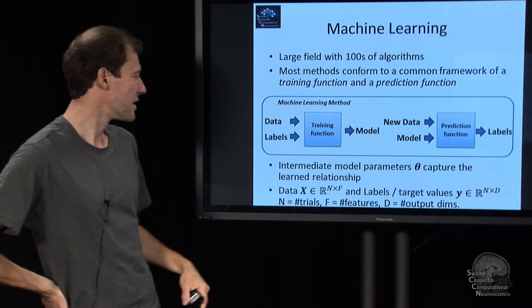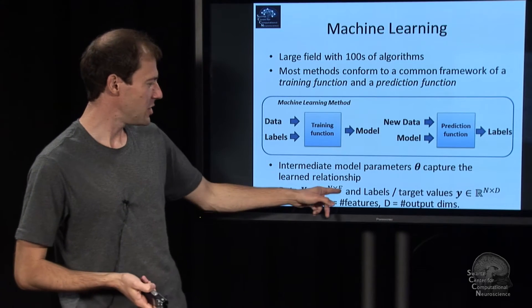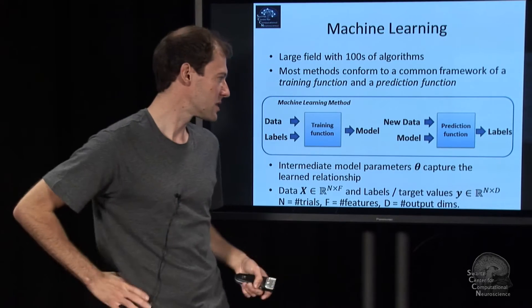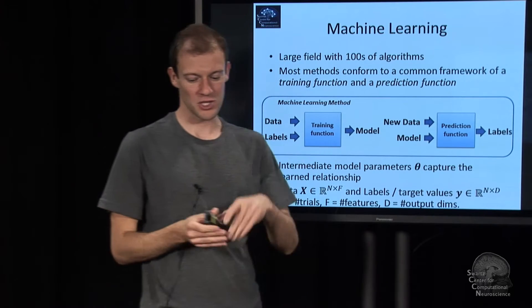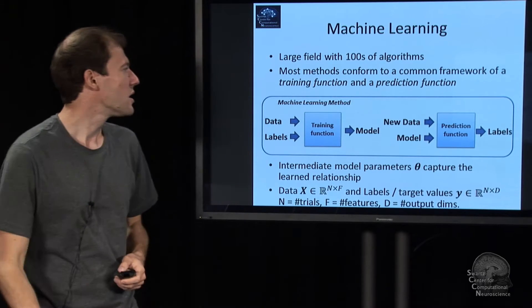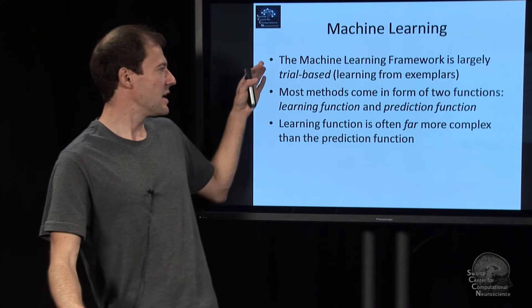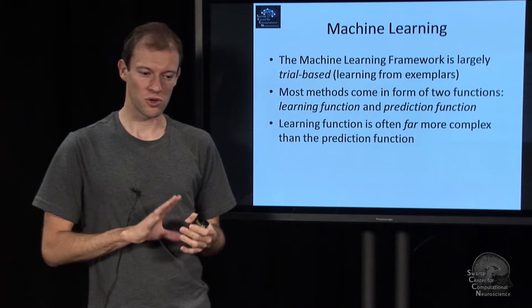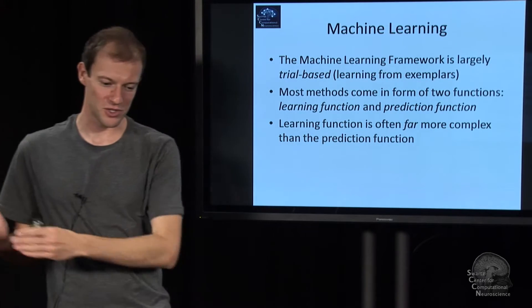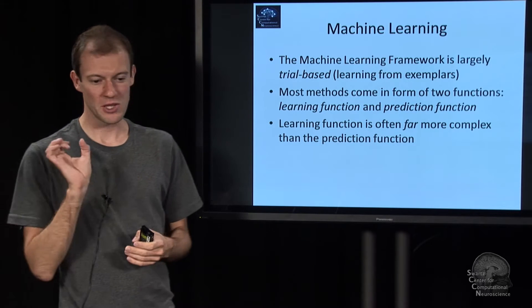So you can kind of formally say data is a matrix of multiple vectors, you know, number of observations, number of features. And the labels is also a matrix, number of observations again, and then the dimensionality of the labels, for example, a single scalar. So that would be then n by 1. As you see, this is based on a discrete collection of exemplars or trials. So basically, machine learning is in stark contrast to signal processing, not really based on time series at all. It's based on exemplars from which you learn and based on which you predict.